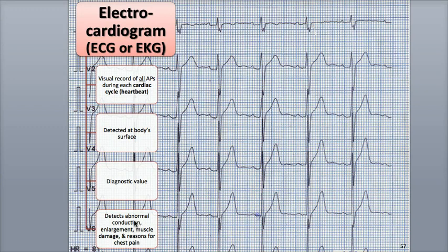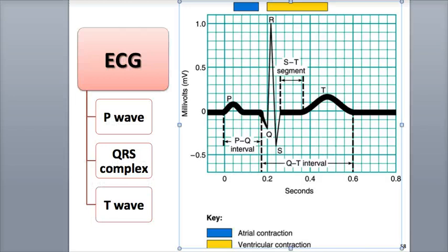It can detect problems in the heart's conduction system, changes in heart size such as enlargements, damage to the heart, and can help explain reasons for chest pain. There are three distinct waves in a typical lead-to ECG associated with each heartbeat.